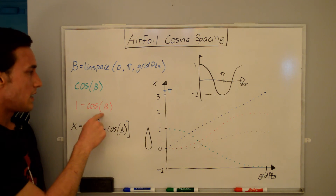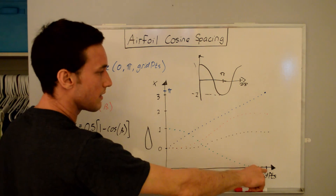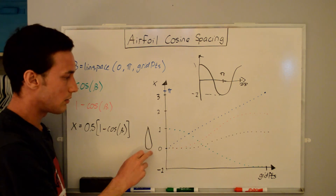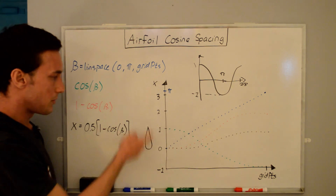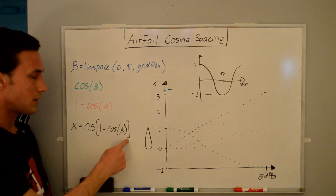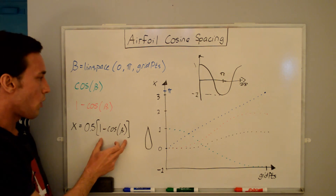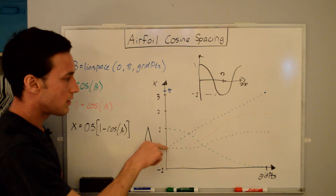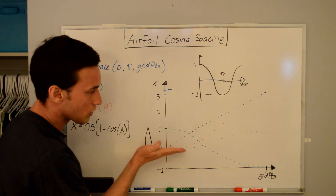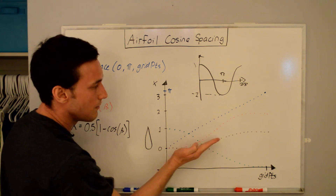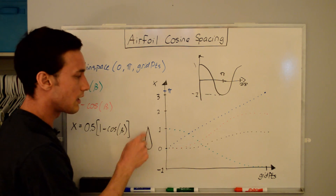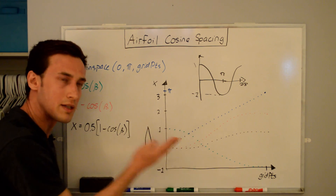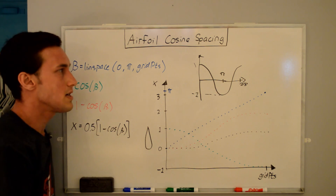The next thing we want to do is one minus cosine beta. If we do one minus one we get zero, and one minus negative one we get two — so the red curve goes from zero all the way up to two. But we need the distribution from zero to one, so we take one half of that. The final expression from the code is one half times (1 minus cosine beta). That's one half of the red curve — the black curve — and it goes from zero to one. A lower slope means higher density of points, a higher slope means lower density, giving you the cosine spacing.